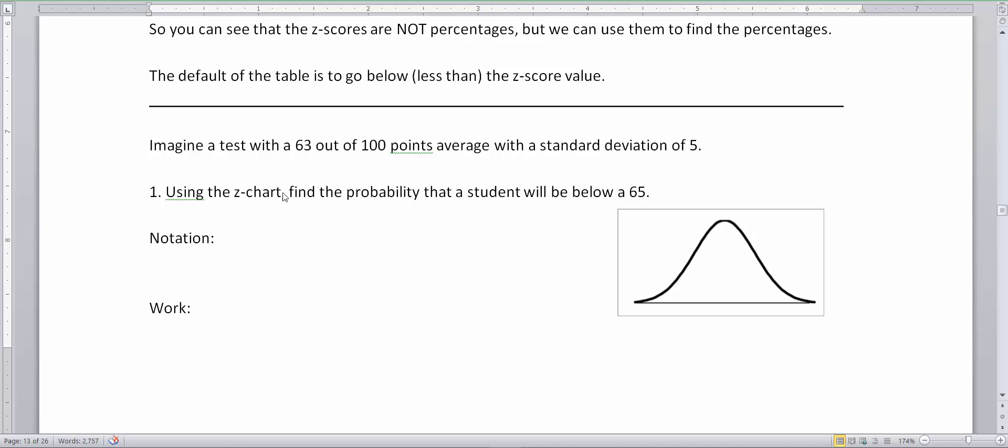We'll start with a straightforward problem. Imagine a test with 63 out of 100 points average, so this is mu, with a standard deviation of 5. This is my standard deviation or lowercase sigma. Using the z-chart, let's find the probability that a student will be below a 65. So x belongs to the normal distribution N(63, 5).